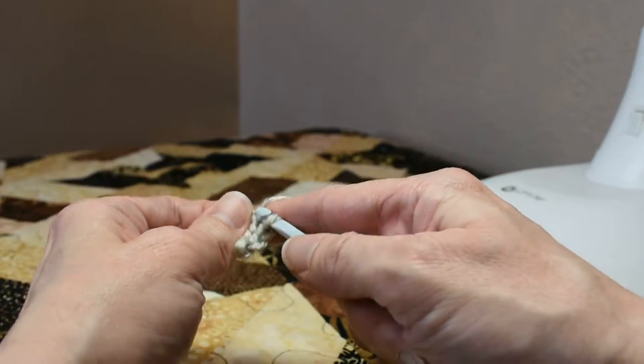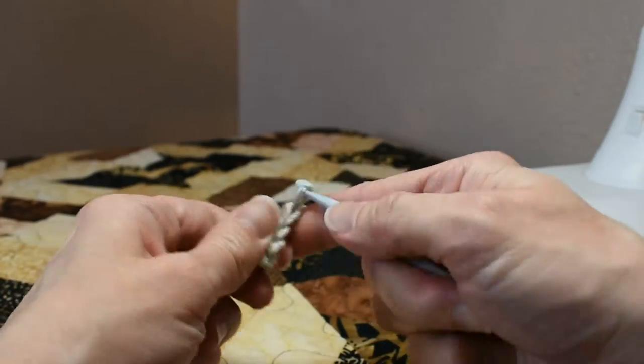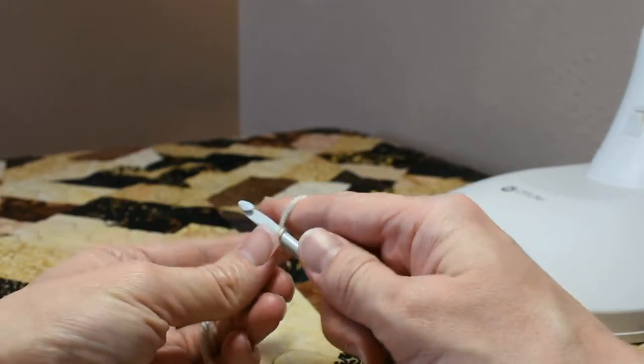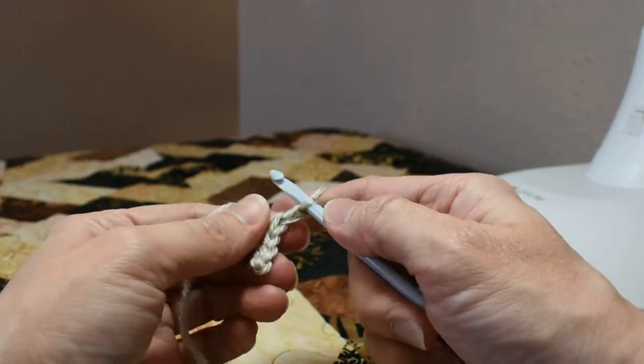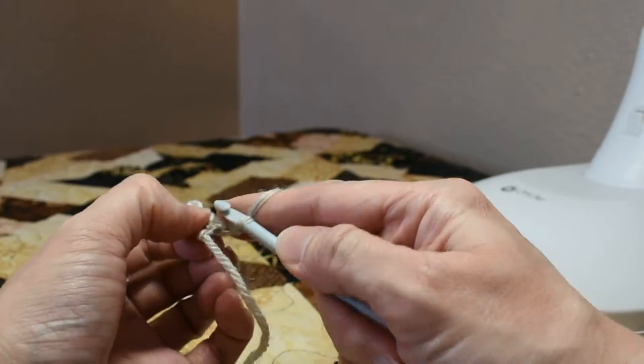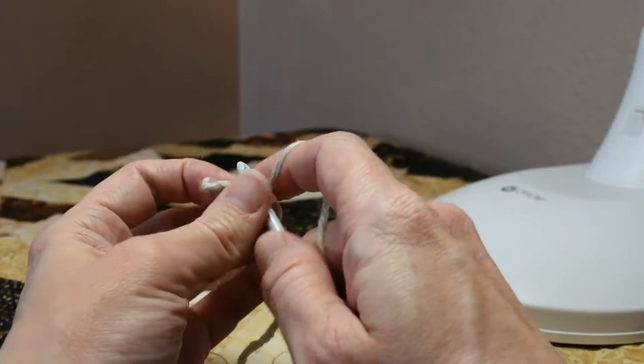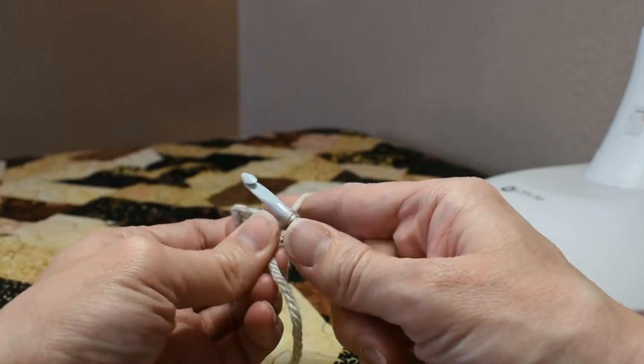Now we're going to single crochet in the last stitch. This forms your first toe. Chain one, turn your work, and single crochet in the single crochet from the previous row.